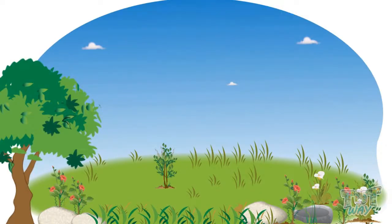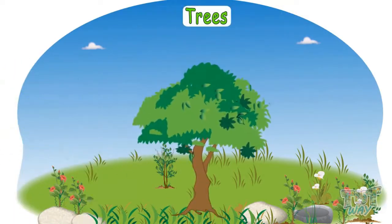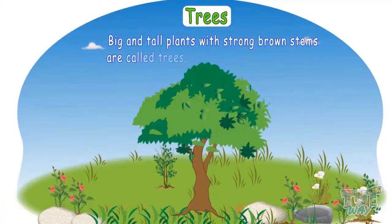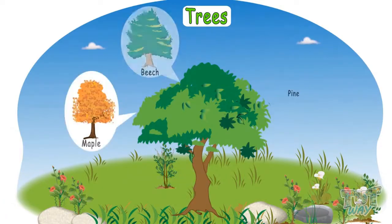Let's study about each type of plant one by one. Trees: big and tall plants with strong brown stems are called trees. These are some examples of trees.